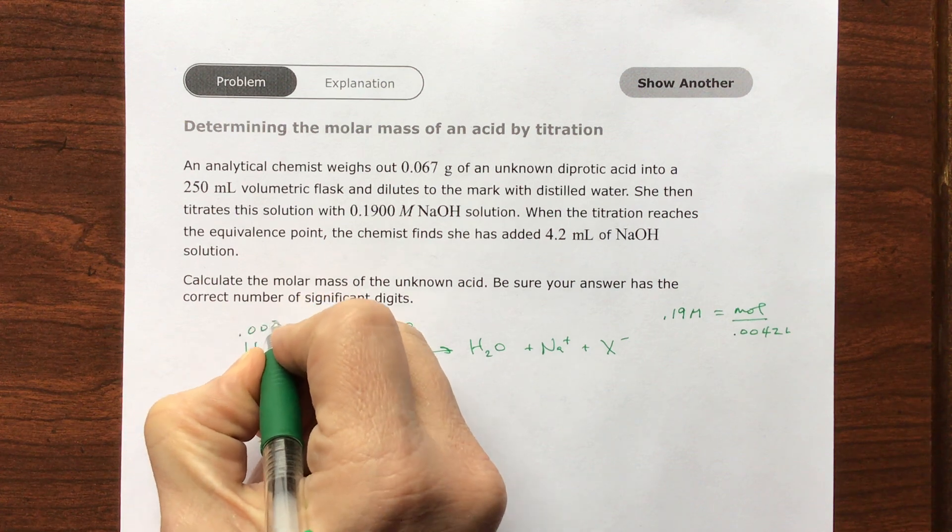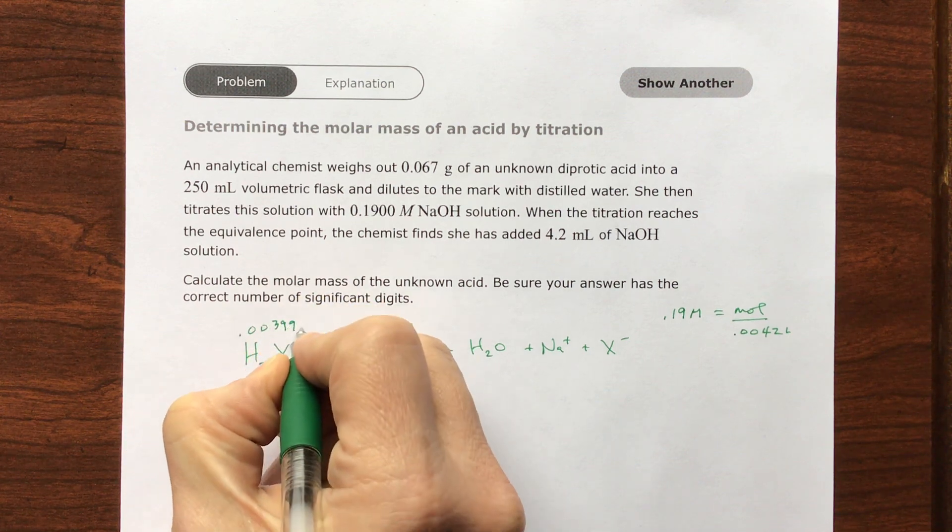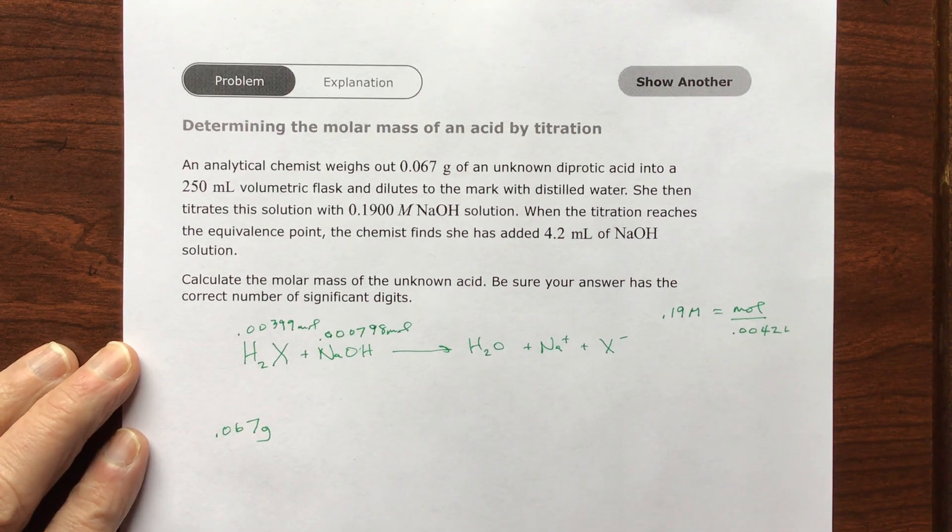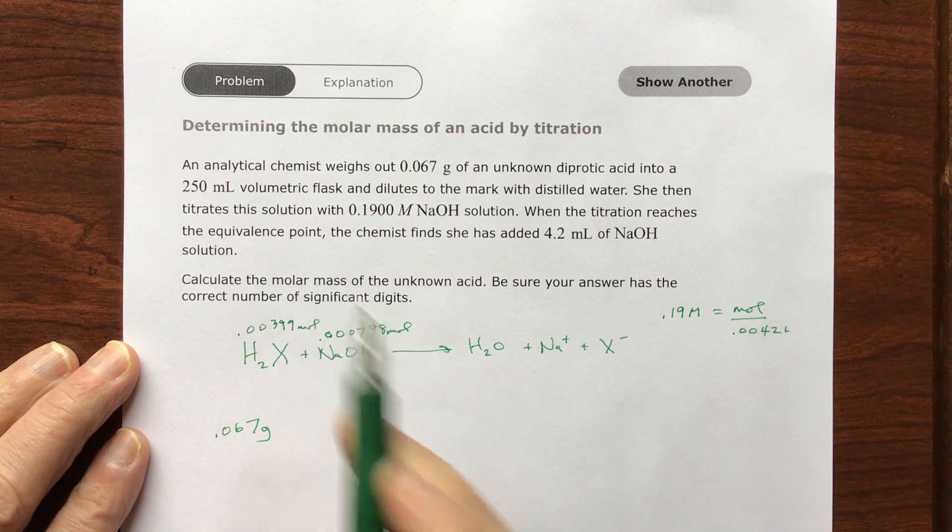So if I have 0.000798 moles of sodium hydroxide, since it's a two-to-one relationship, I need half as much of the acid, so this is going to be 0.000399 moles of the acid.